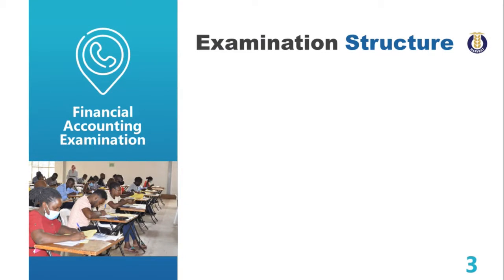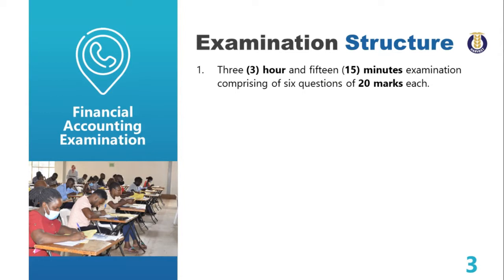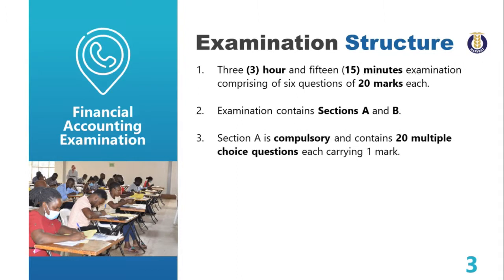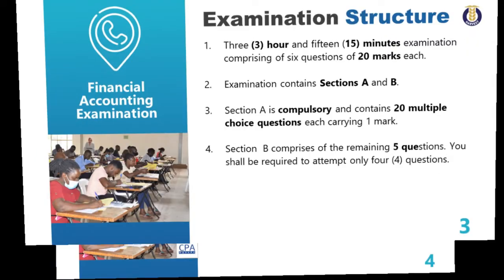The financial accounting examination is a three-hour and 15-minute examination comprising six questions, each carrying 20 marks. The examination contains two sections: Section A and Section B. Section A is compulsory and contains 20 multiple choice questions, each carrying one mark. Section B comprises the remaining five questions, and you are required to attempt only four out of those five questions.